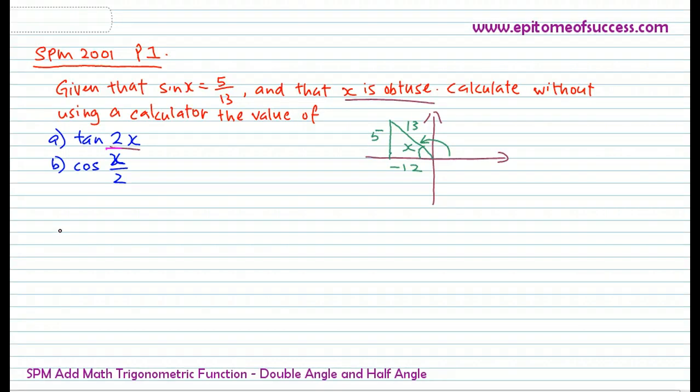Alright, welcome back. Now, how do we answer cos x over 2? Now this is actually the half-angle formula, and if you refer to the half-angle formula, you will see that cos x over 2 is actually a number of things. Let's write it here so that it's clearer.